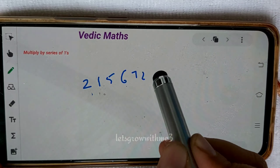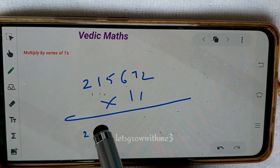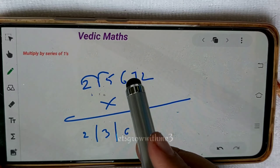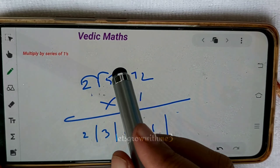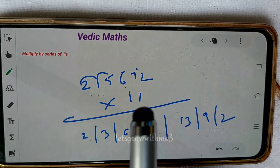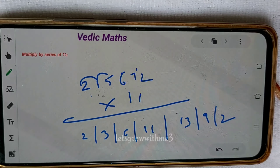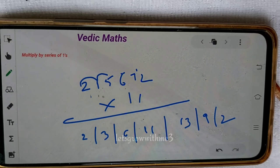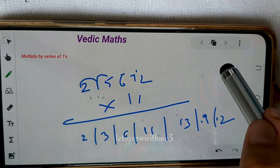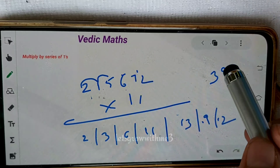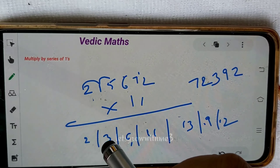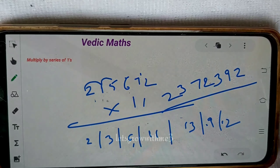Final example: 2156728 times 11. Write 2 as it is, then crisscross values: 3, 6, 11, 13, 9, 2. Now do the balancing. We have both non-carry and carry combinations. Working right to left: 2, 9, 3, then 11 plus 1 is 12 carry 1, then 7, remaining values 3 and 2 as they are. Answer is 23724008.